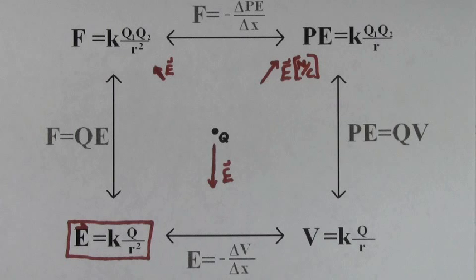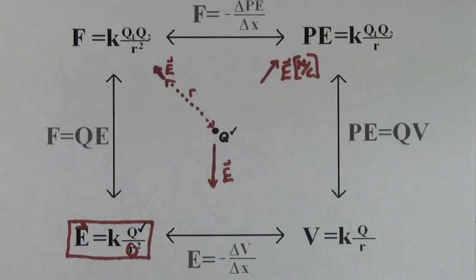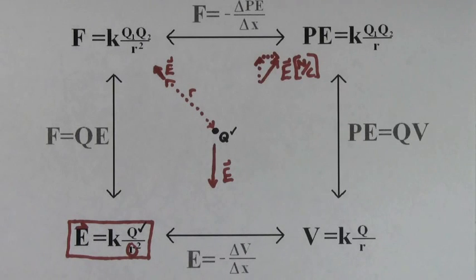You can use the formula KQ over R squared to find the size of the electric field. Q refers to the charge that's creating the electric field. R refers to the distance between the charge creating the field and the point in space where you're determining the electric field. Since the electric field is a vector, you have to worry about breaking it into components.